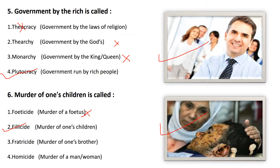Next: government by the rich is called — a government which is run by rich people. The options are: theocracy — government by the laws of religion, not the answer; hierarchy — government by gods, not the answer; monarchy — government by the king or queen, not the answer; plutocracy — government run by rich people. Plutocracy is the right answer.